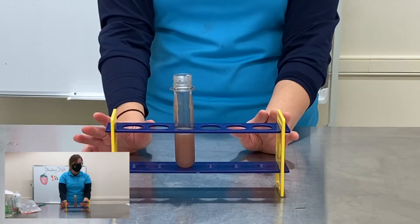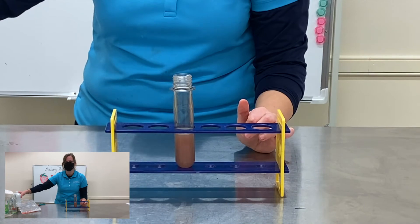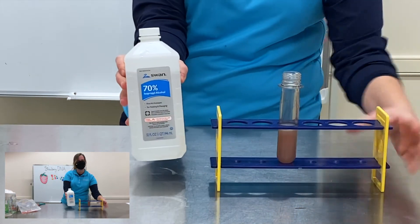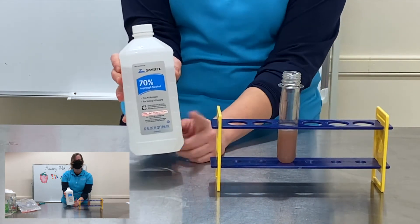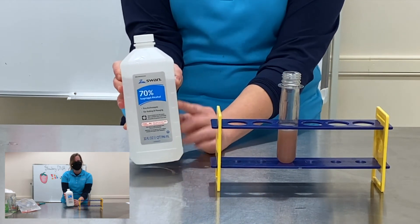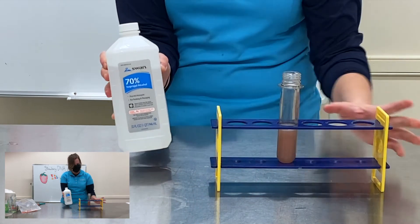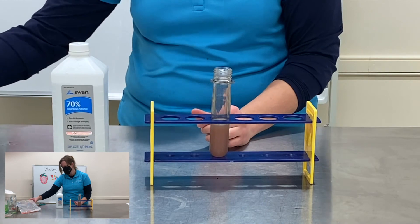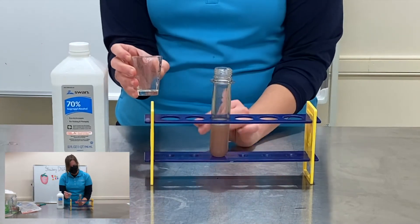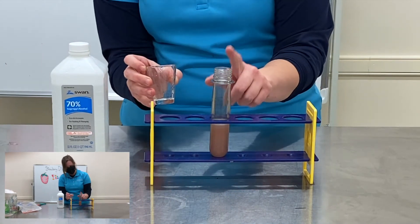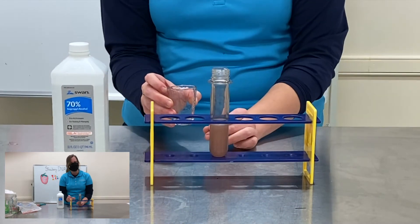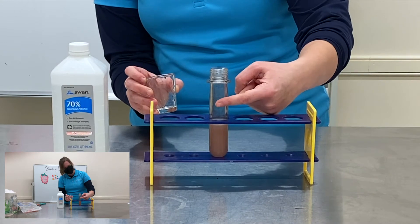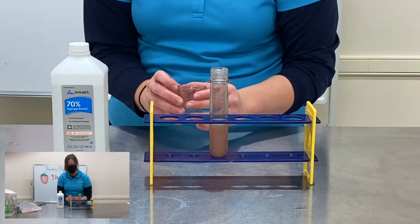So the very last thing we need is something called isopropyl alcohol. Now this is an item that you might have in your medicine cabinet at home. Now you want to put this in the freezer for a little bit because you want it to be nice and cold. So I've just pulled it out of the freezer. It's very cold. And I need to add about 90 milliliters or three tablespoons of the alcohol to my solution. I have learned that sometimes you might even need less than that. Once you have a good layer of the alcohol on top of your strawberry you might be able to stop right there.